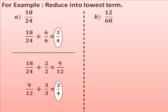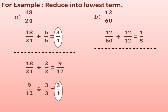Let's solve the next question. Question B: reduce 12 upon 60 in its lowest term. The HCF of 12 and 60 is 12. Dividing both by 12 gives 1 upon 5. So 1 upon 5 is in the lowest term because 1 and 5 have no common factor other than 1. Or in another way, 12 upon 60 divided by common factor 2 gives 6 upon 30, which is not in the lowest term. Remember: to reduce a fraction to the lowest term, we keep dividing by common factors until 1 is the only common factor of the numerator and denominator.